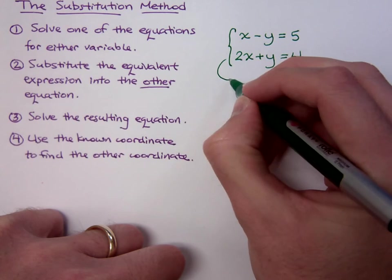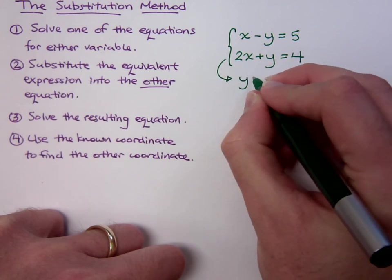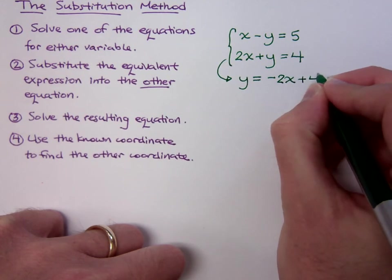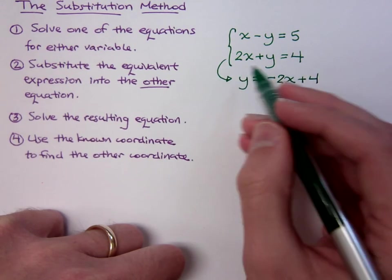we understand that this guy becomes y equals negative 2x plus 4, just solving it for y. I just subtracted 2x on both sides.